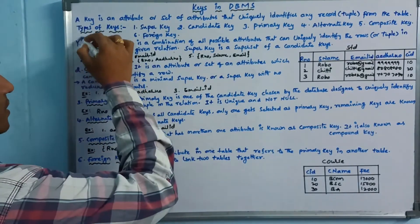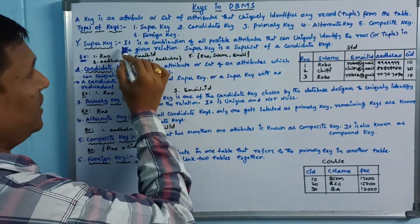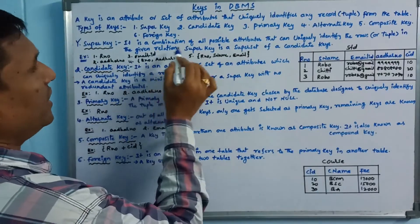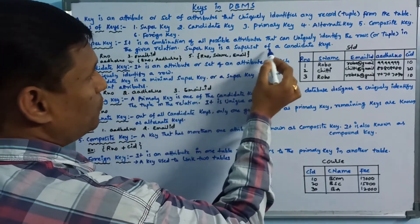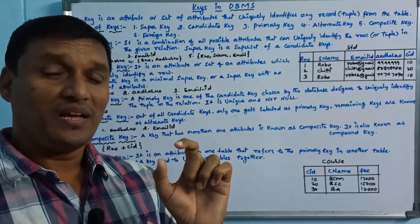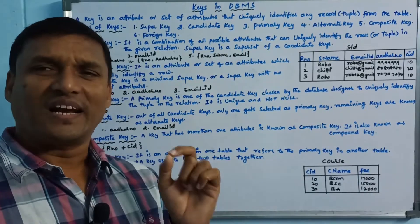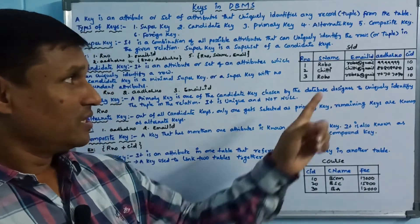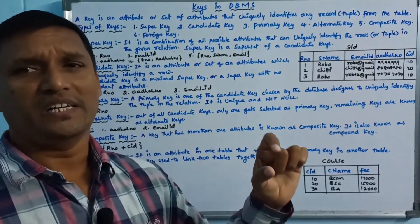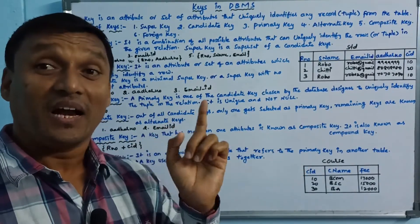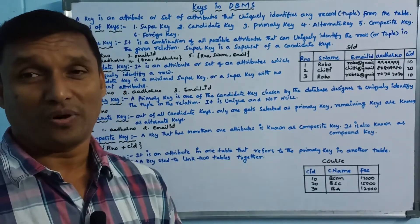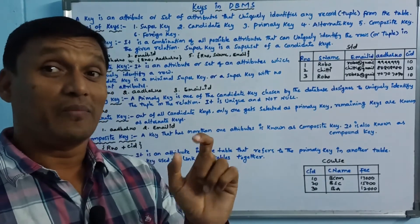First one: super key. It is a combination of all possible attributes that can uniquely identify the row in the given relation. Super key is a superset of a candidate key — it is the top key. We design all possible combinations. If you want to use the student table with rule number, username, email, Aadhar card number, and course ID, any combination that uniquely identifies a record is called a super key.